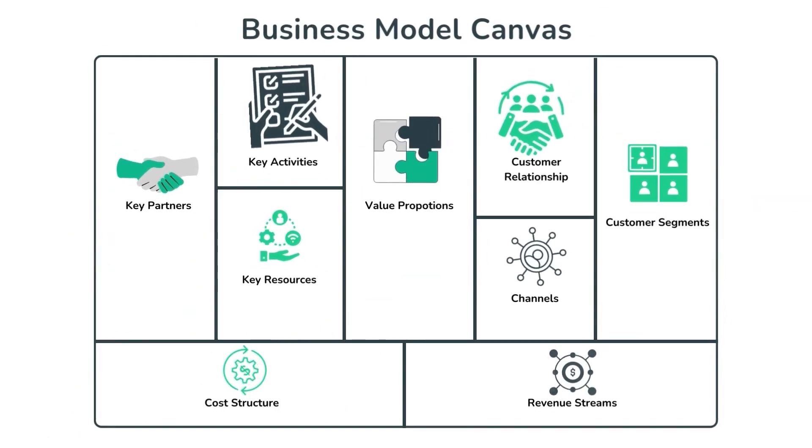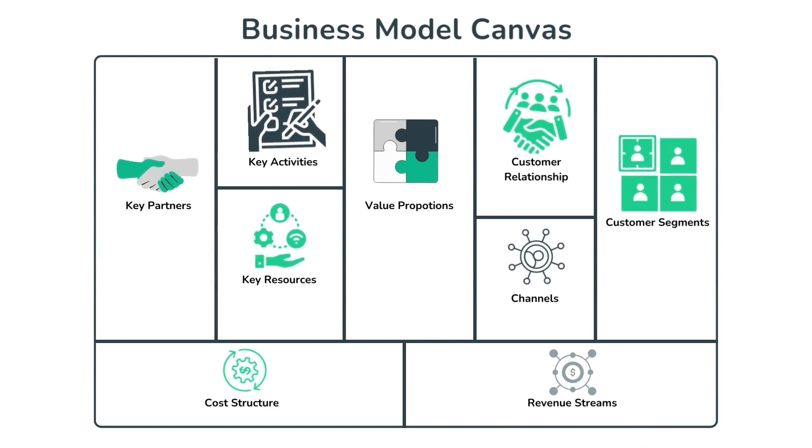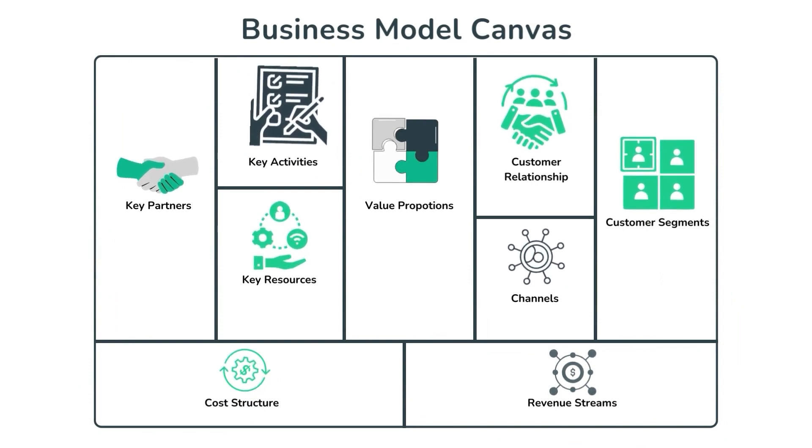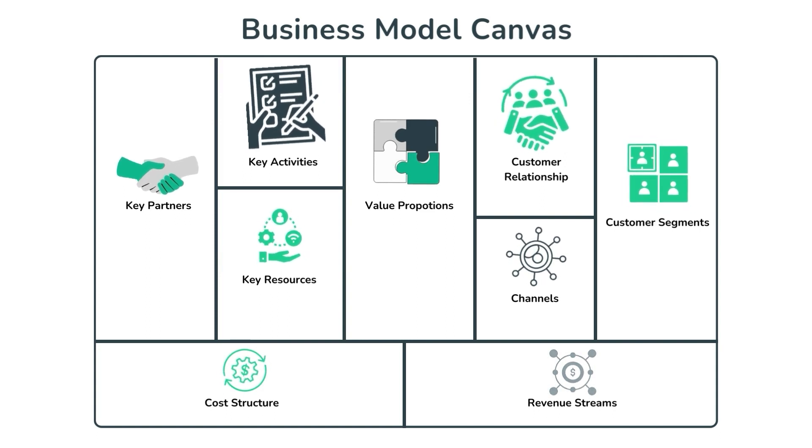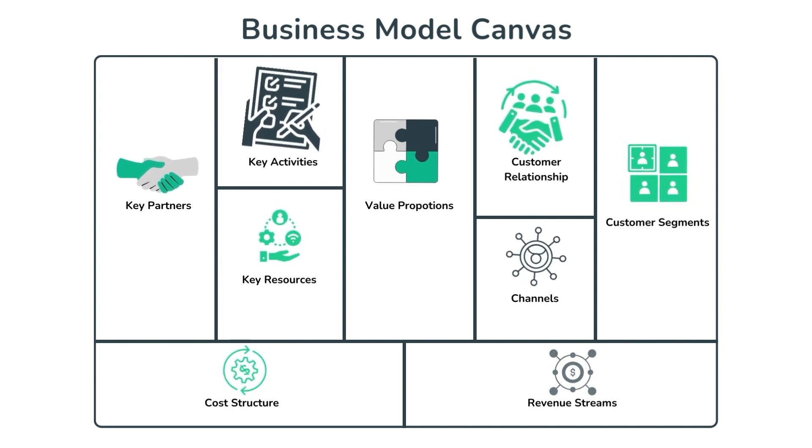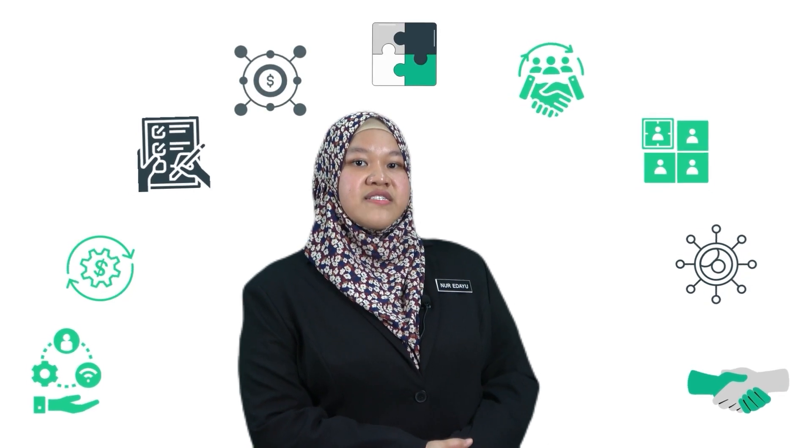Now that we have covered all nine components, it's time to look at the bigger picture. The Business Model Canvas allows you to visualize the relationships and interdependencies between these components, helping you assess your business's overall viability and potential areas for improvement.